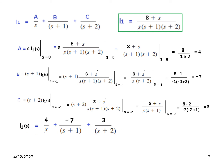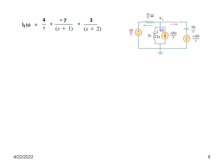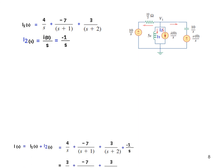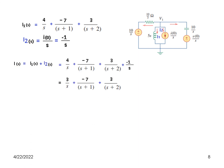We write I1 in the S-domain using these coefficients. For I2 in the S-domain, we add the initial condition term I(0) over S, where I(0) equals minus 1. Combining I1 plus I2 gives the total current through the inductor in the S-domain, which we then simplify.